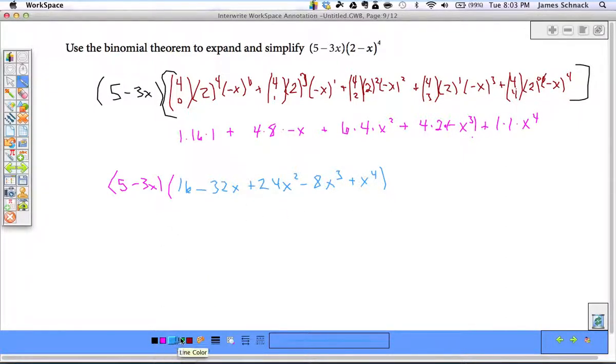And now we just go through and we distribute the 5 and the 3x. So 5 times 16 is 80. That would be 5 times negative 32.